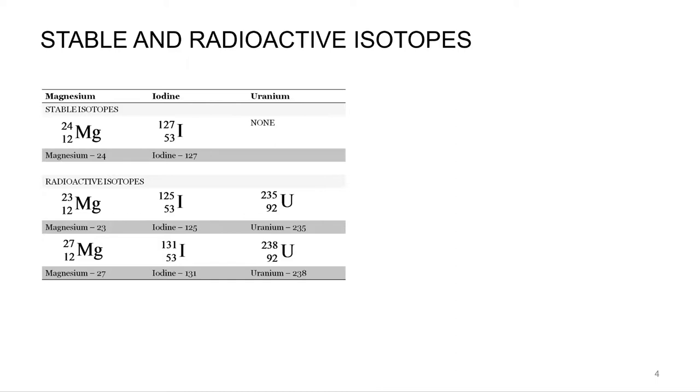So here's just a few examples. Magnesium, magnesium-24, 12 protons, 12 neutrons, stable, not going to break down.